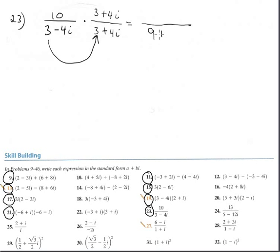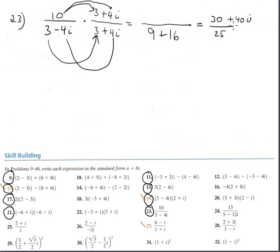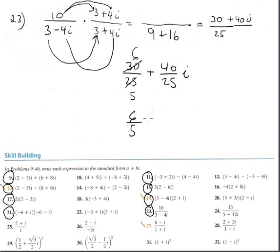Using the shortcut for the denominator: 3 times 3 is 9, plus 4 times 4 is 16, equals 25. For the numerator, it is a monomial times binomial: gives 30 plus 40i. Separate with a common denominator: 30 over 25 plus 40 over 25 times i. Express in lowest terms — divide by 5: that gives 6 over 5 plus 8 over 5 times i. That is the answer.